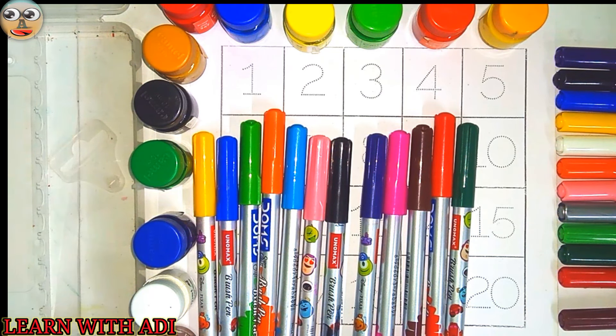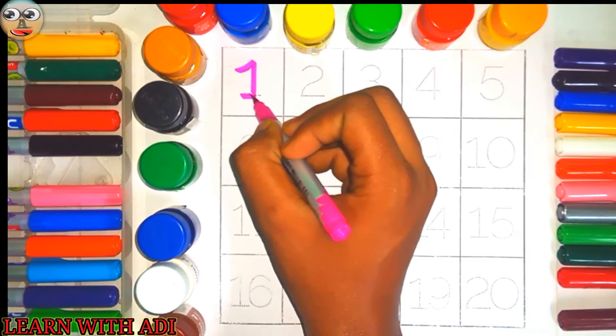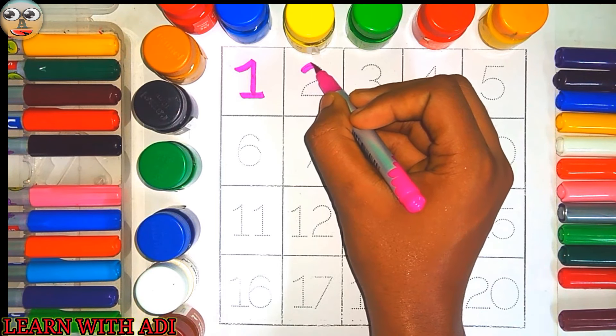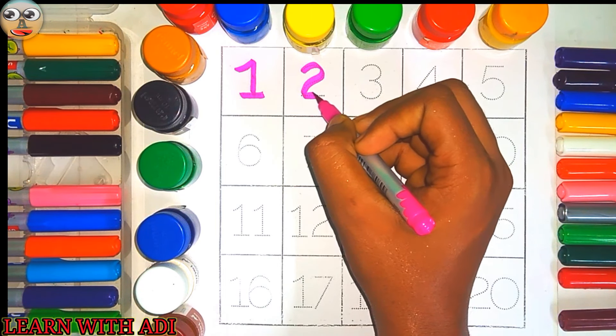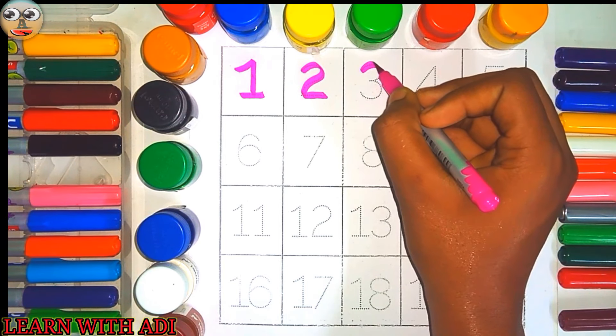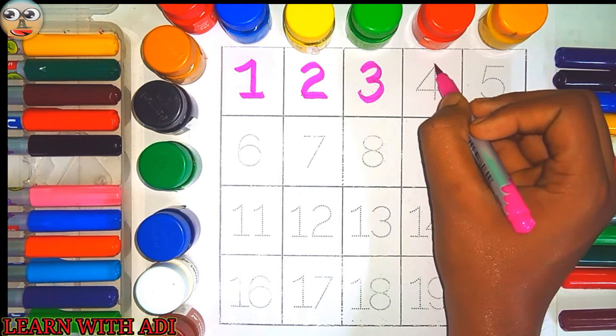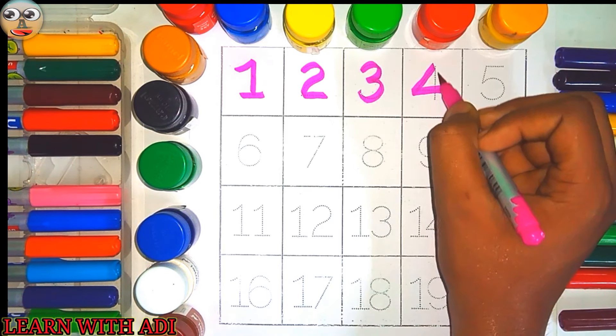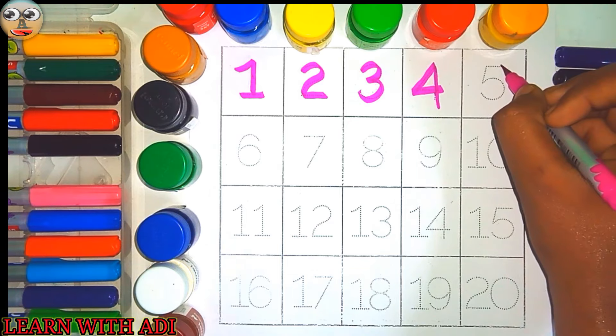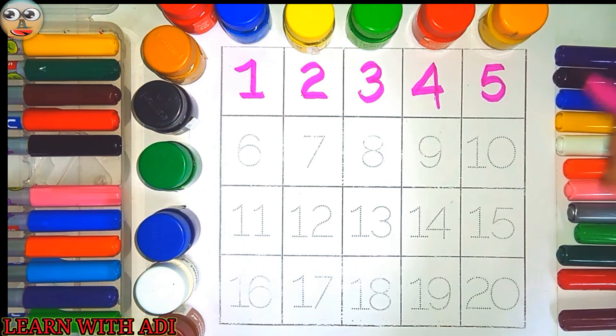Let's start the class. 1. This is 1. 2. This is 2. 3. This is 3. 4. This is 4. 5. This is 5.